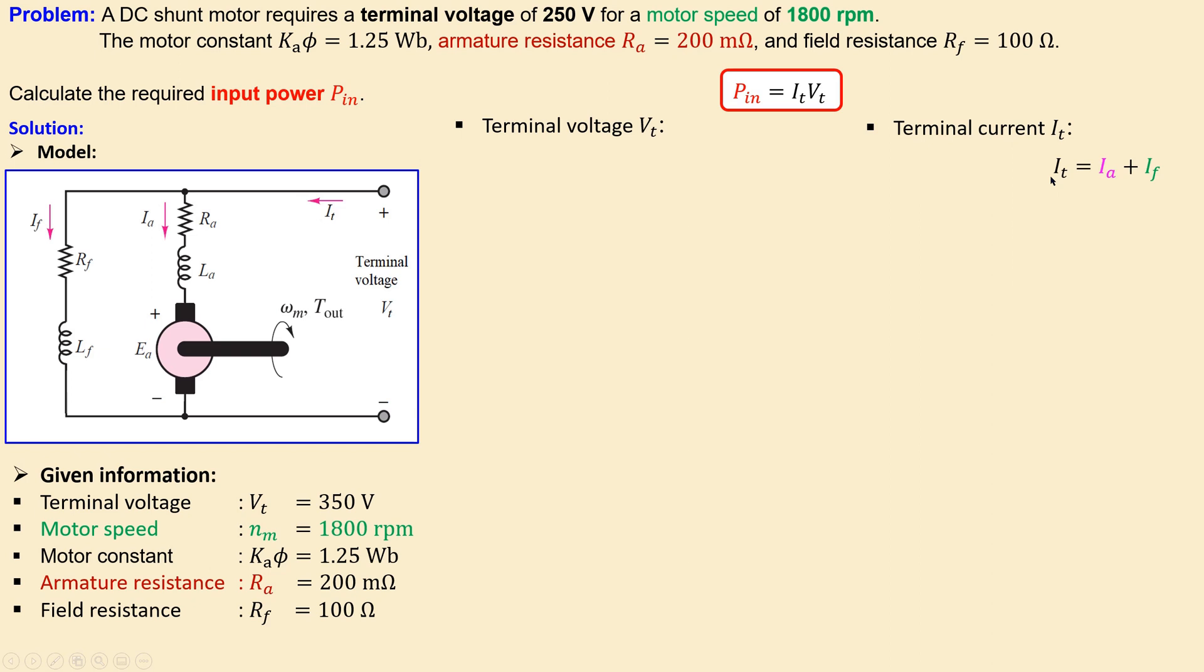If we look at the terminal current, it will be then the summation of the armature current and also the field current in this configuration. That's just this. But these two are both unknown.